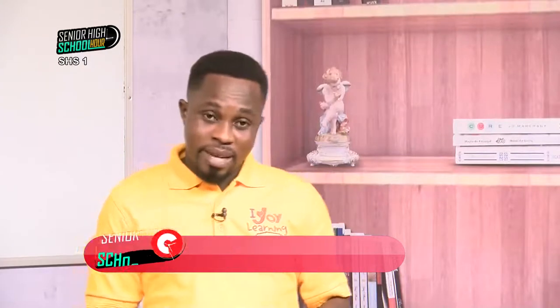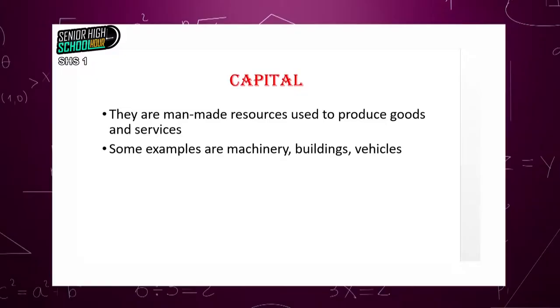Now let's move on to capital as another factor of production. Capital is a man-made resource used to produce goods and services. Think about all these resources used to produce goods and services that were made by man — examples would be machinery, buildings, vehicles. These are resources made by man, used for the production of goods and services, and they are termed capital.